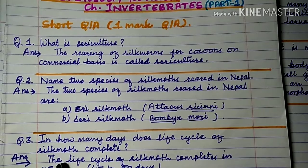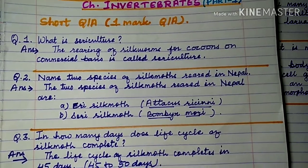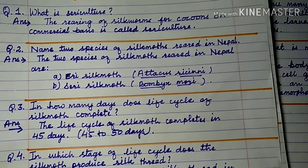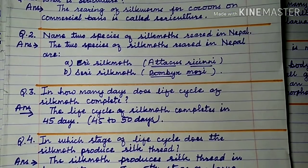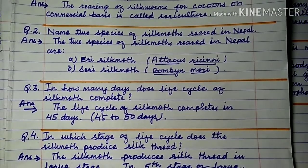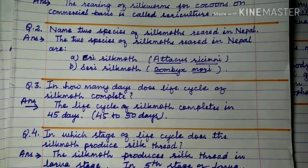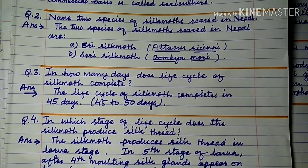Question number 3: In how many days does the life cycle of silk moth complete? The life cycle of silk moth completes in 45 days, that is actually 45 to 50 days.